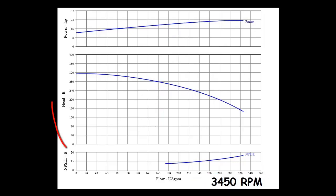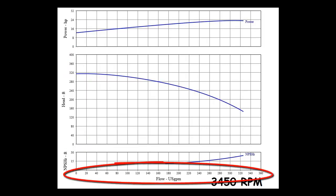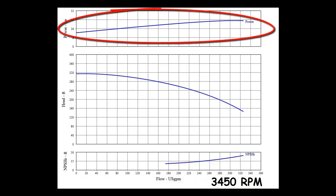Lift and feet of head is on the left side of the performance curve. The flow rate in gallons per minute is on the bottom of the performance curve. The horsepower curve shows how much energy is used at all different operating points.